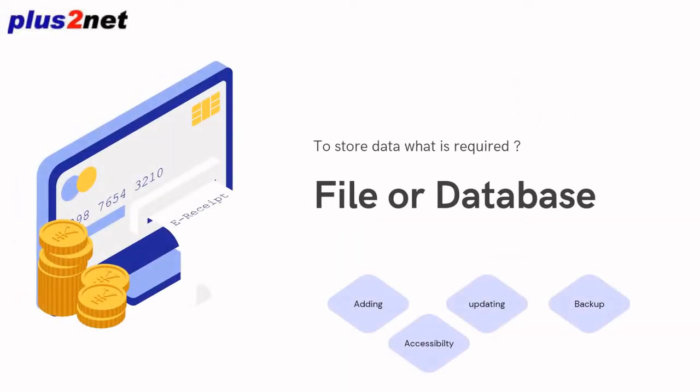So why should you use a database? What can't we do in a file system that makes us move to a database? If I have something like 10 records of a student and I want to store just the name, address, and so on, I can use a flat file, a comma-separated value CSV file, or any simple text file where I can search and find out the address of a student.